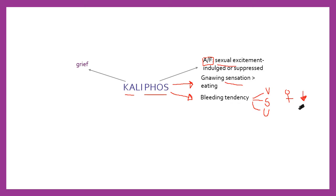Another thing similar to phosphorus is that phosphorus has respiratory complaints aggravated by thunderstorm. Caliphos has hay fever and hay asthma, and the peculiar thing about the asthma is that it is aggravated by food — although the person has an ameliorating modality of eating in GIT complaints, the respiratory system has aggravation from food.